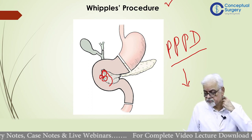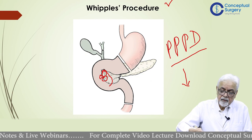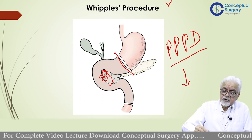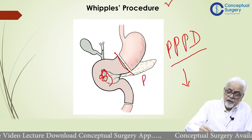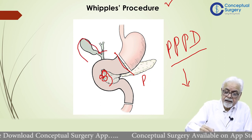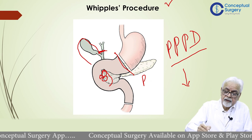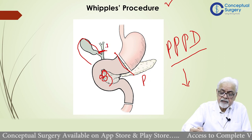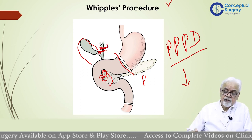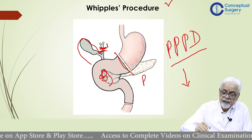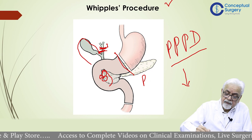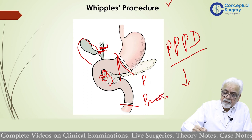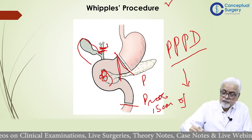In the Whipple's procedure, we do a gastrectomy — generally a partial gastrectomy. Then removal of the bile duct and the gallbladder; we generally remove the bile duct leaving behind a stump of about a centimeter or two at the level at which the bile duct is divided. And then we remove the head of the pancreas and then the proximal 15 centimeters of jejunum.